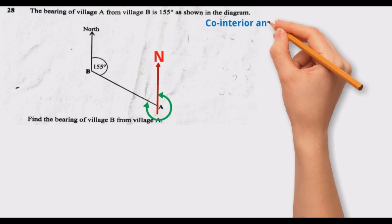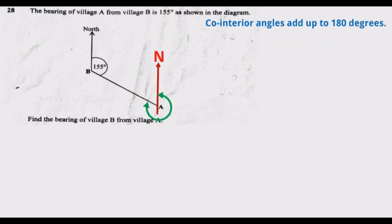So the first one, we are going to use co-interior angles add up to 180. To use this property, we are going to consider 155 degrees. Then that is also co-interior with the angle here, the one I've marked in blue. These two angles are co-interior angles with 155.